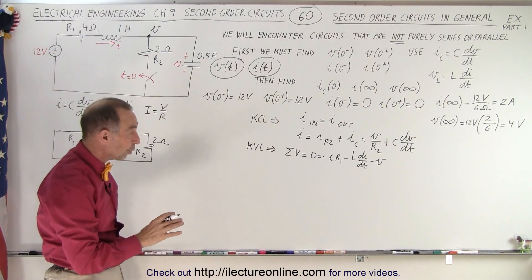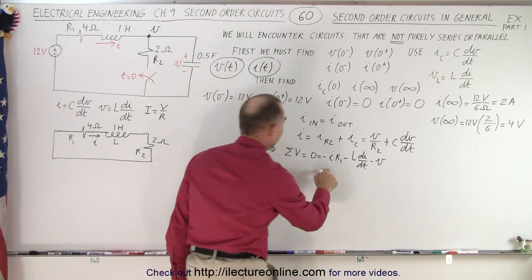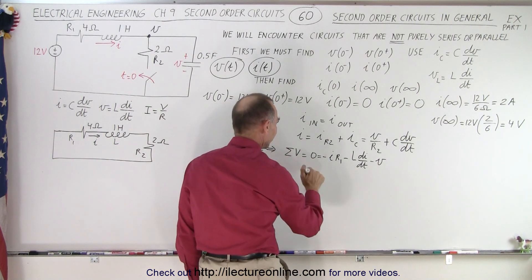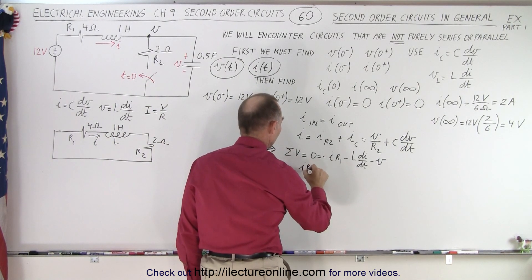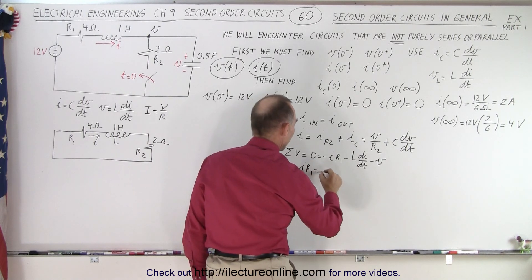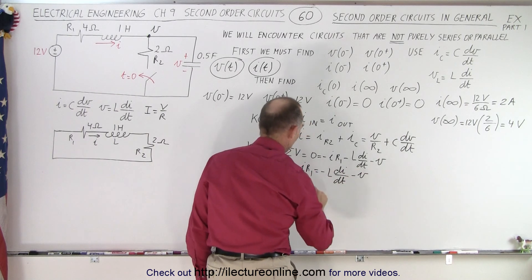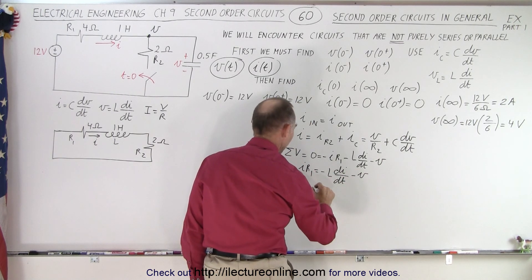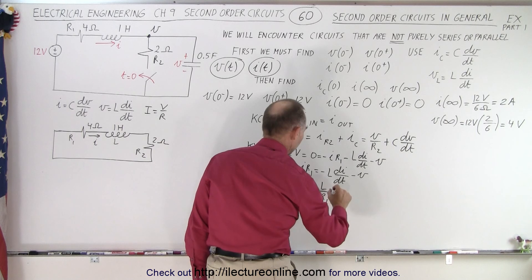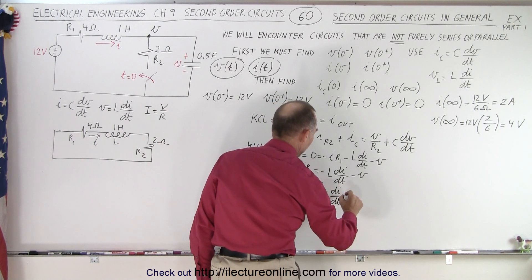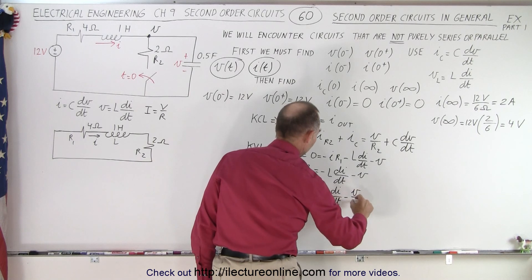So now I need to solve that for I. Because what I want to do is set it equal to this I right there. So here, when I move to the right side, I have I times R1 is equal to minus L dI/dt minus V. Or I is equal to minus L over R1 times dI/dt and then minus V over R1.